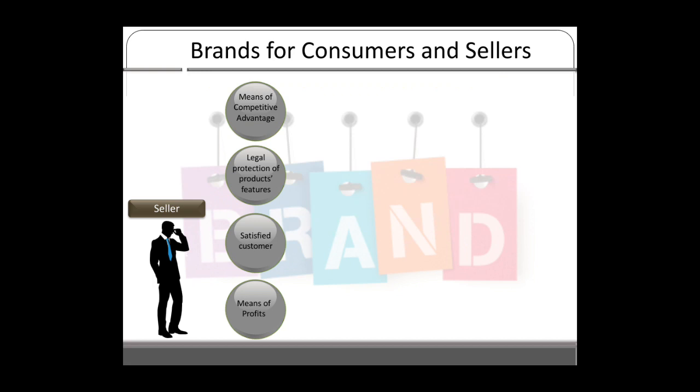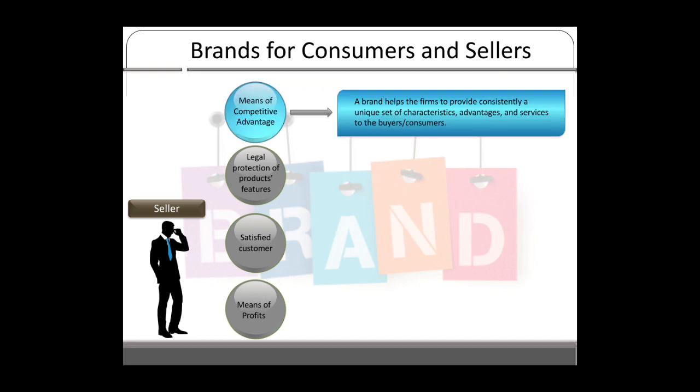Now we shall look into the company's perspective. The first one is means of comparative advantage. A brand helps the firm to consistently provide a unique set of characteristics, advantages, and services to buyers and consumers — it is how they are able to have an edge over other competitors. The unique attributes which the brand provides make consumers more happy with a particular product or brand.